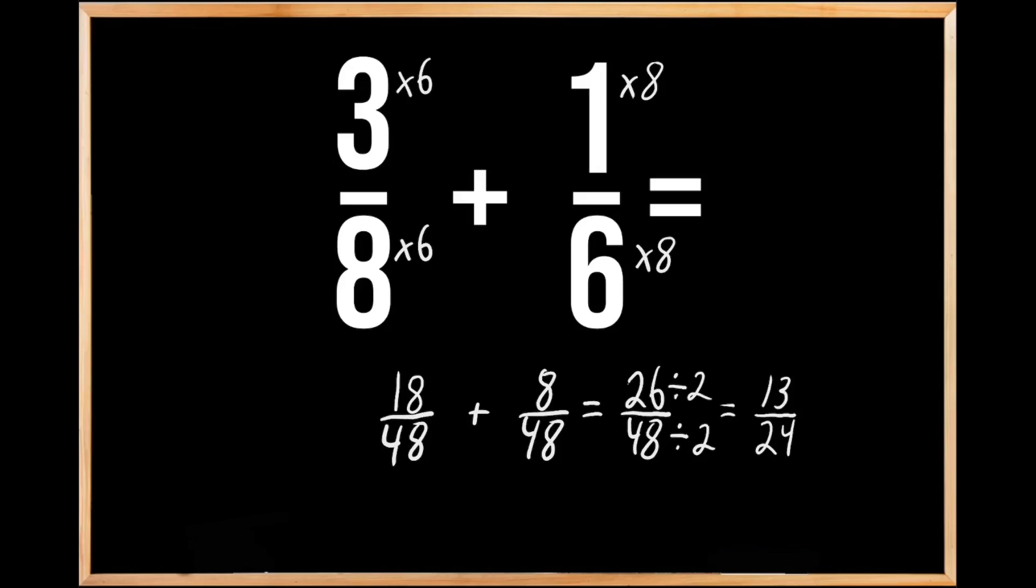Since there's no common factor other than 1 between 13 and 24, we've written this fraction in its lowest possible terms. So when we add 1/6 to 3/8, we get the fraction of 13/24 in its lowest possible terms.